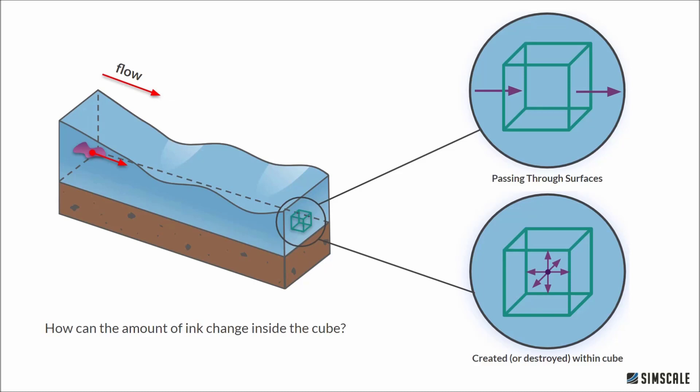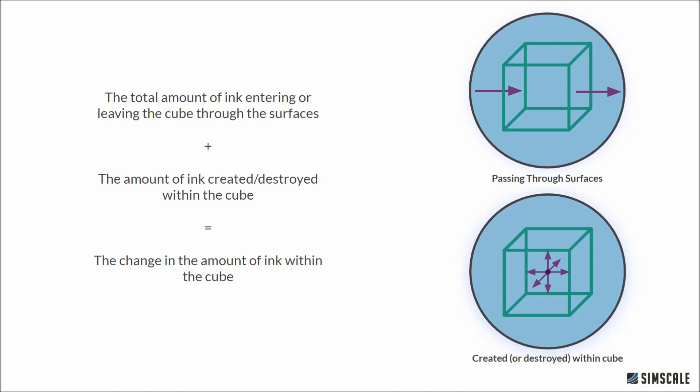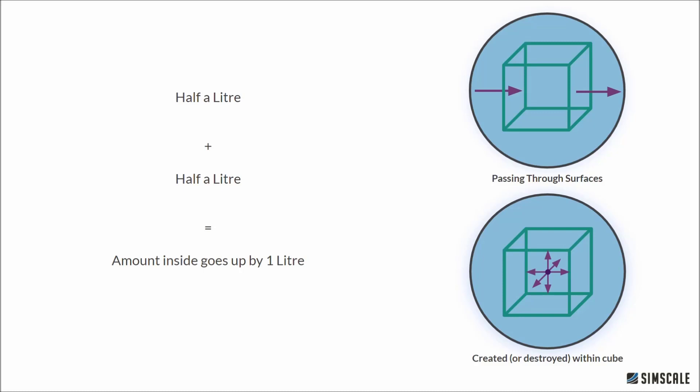So maybe we can form a basic equation. The amount of ink going through the surfaces plus the amount of ink created or destroyed within the cube will give us the change in the amount of ink within the cube. So if I inject a litre of ink upstream and half of that enters the cube, half a litre, but I also inject half a litre directly into the cube, the amount of ink inside the cube has gone up by a litre. That's what our equation can give us.